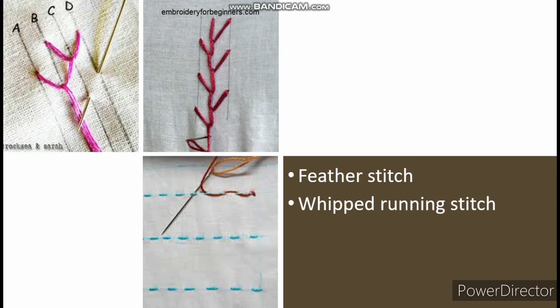Whip running stitch: among all embroidery techniques, whipping an embroidery stitch is a terrific thing to know. Whipping a stitch gives you a whole new stitch with a whole new look. For whip running stitch, you first need to know how to work the most basic embroidery — the running stitch. Whipped running stitch is a simple, quick stitch to work, and one of many line stitches that can be used for bold or delicate outlines depending on your choice of thread. It looks great when using two colors of thread, and you can change the look by varying the width and spacing of your running stitches.